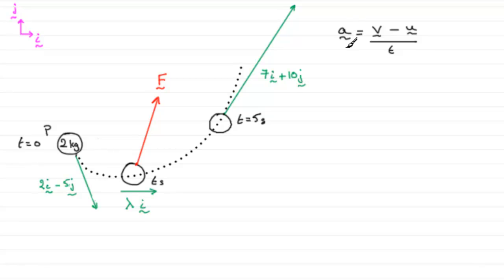Now, the acceleration is constant because force was constant. We're told that in the question, so the acceleration must be constant. And we found out in the previous part that the acceleration was i plus 3j.